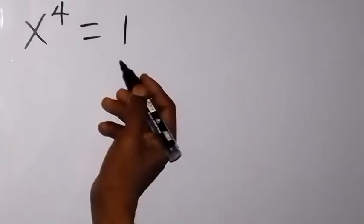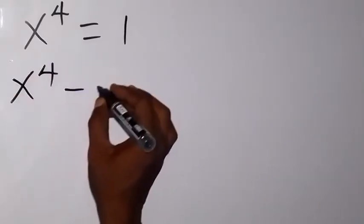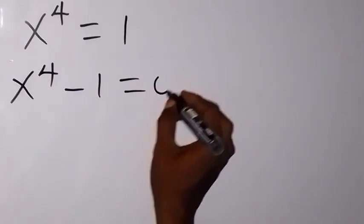Now, from here, let's take this one to this side. We have x raised to the power 4 minus 1, then we'll then be equal to 0.